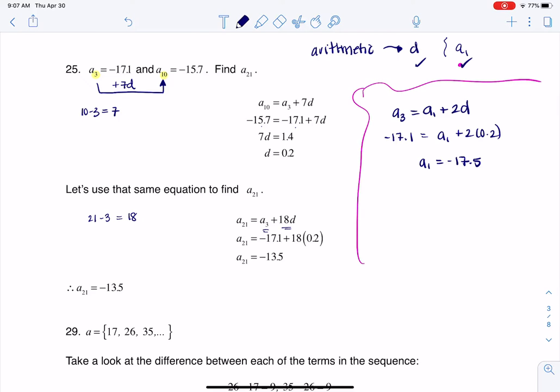And so that is just a nice number to have. Then what you could do is you could say, well, A sub 21 was A sub 1 plus 20Ds. And again, why the 20? Well, if we've got the 21st term here and the first term here, that is a difference of 20 terms. And then I can just plug in A sub 1 was negative 17.5, 20 times 0.2. And when I crunched that on my calculator, I get negative 13.5, which matches what I got here.